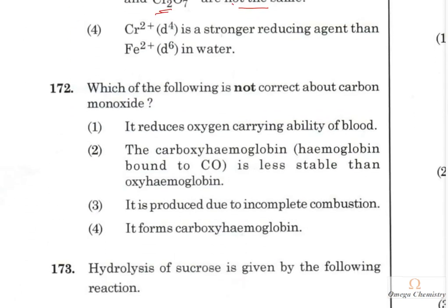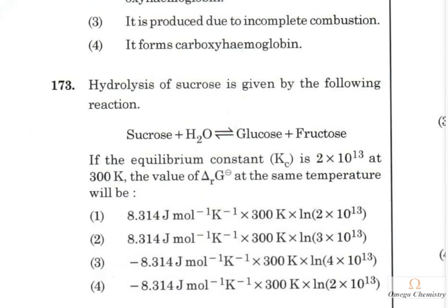Question 164: Which of the following is NOT correct about carbon monoxide? CO reduces the oxygen-carrying ability of blood (true — CO binds strongly to hemoglobin). Carboxyhemoglobin is less stable — no, it is actually very stable. So the statement that carboxyhemoglobin is less stable is the wrong one, making it the correct answer.